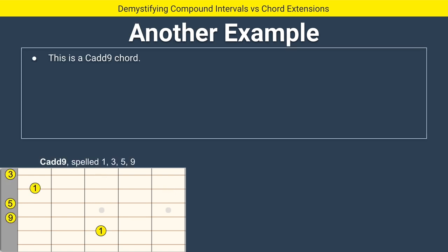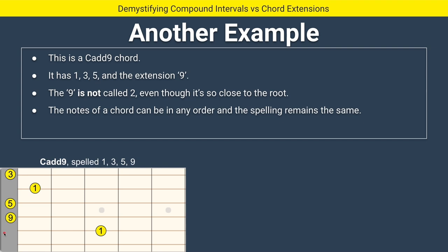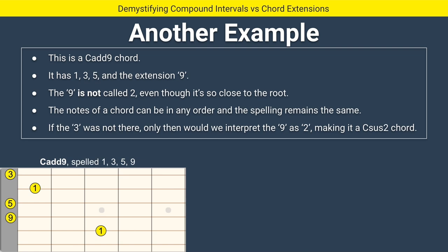Another example: C add nine, spelled one, three, five, and nine. You can see the root, the three, the five, the root again, and then the nine. The nine is not called two, even though it's so close to the root — it doesn't have to be an octave away. The notes of a chord can be in any order and the spelling remains the same. As an interval, 'nine' means the two that's an octave up; as a chord tone, it's simply called nine.